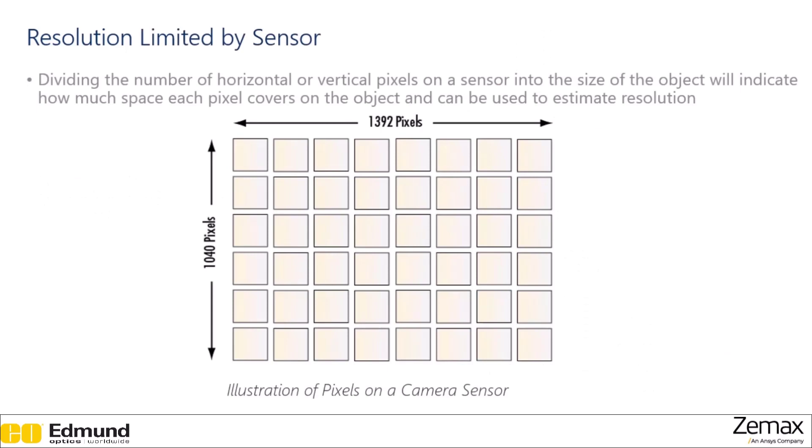The easiest to quantify is the resolution that's limited by the sensor. So if we look at the number of horizontal or vertical pixels on a sensor, we divide that into the size of an object, it will indicate how much space each pixel covers on the object and can be used to estimate resolution. So for example, if we have a thousand pixels and we are imaging an object that is one meter tall, then each pixel covers 0.1 centimeters on the object, and you are never going to get resolution that is better than that, because you can't have multiple pieces of information on a single pixel.